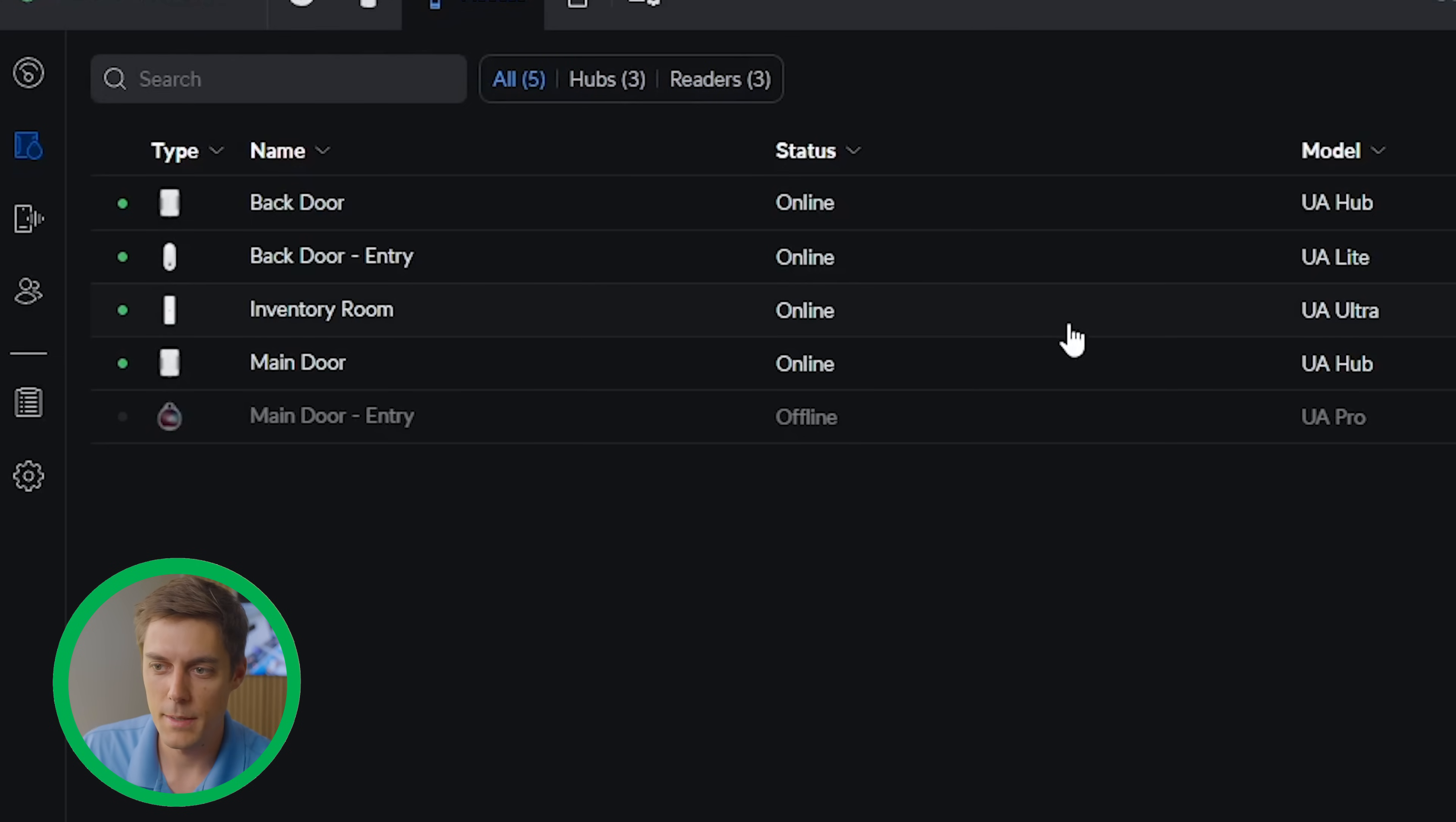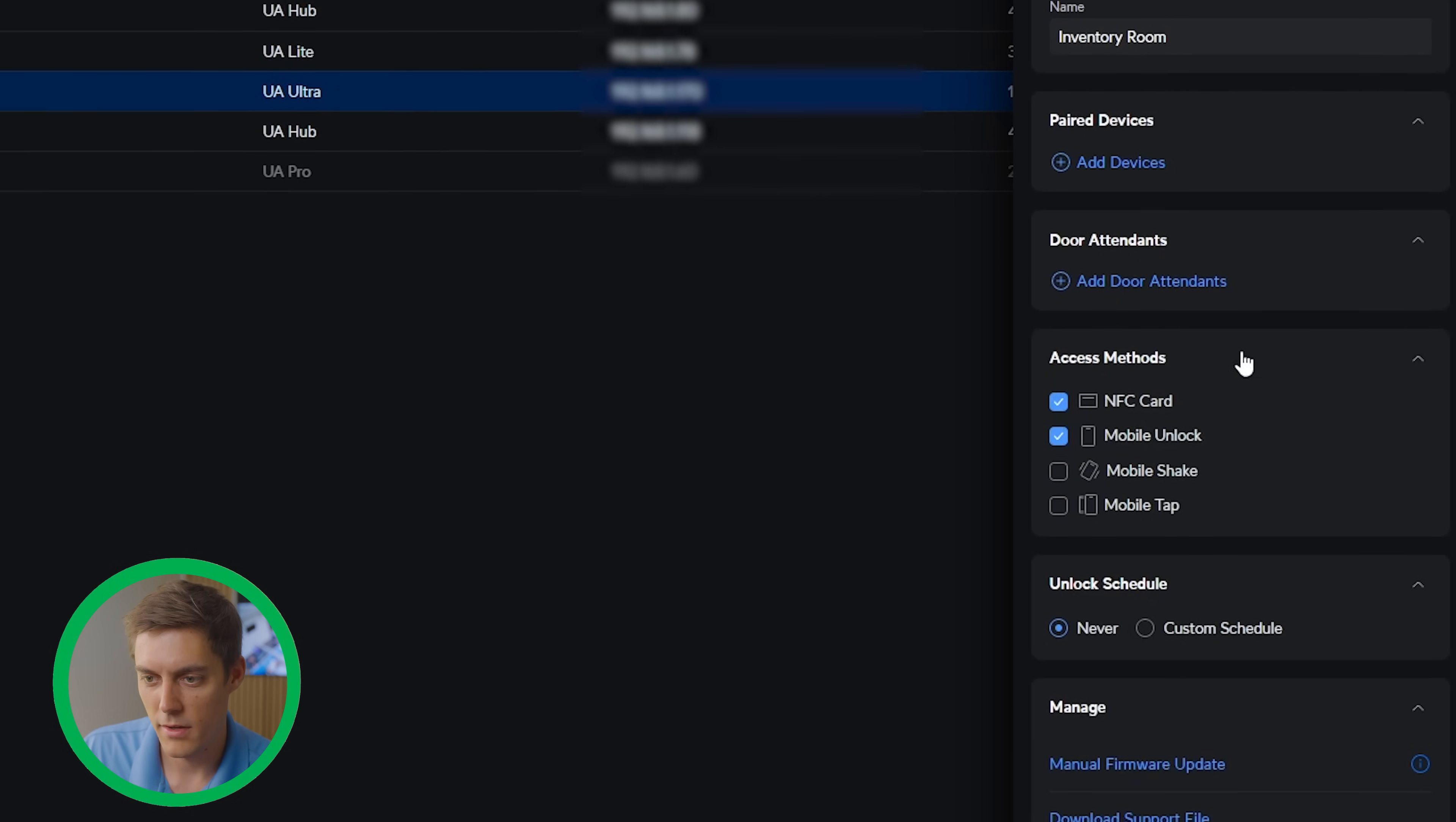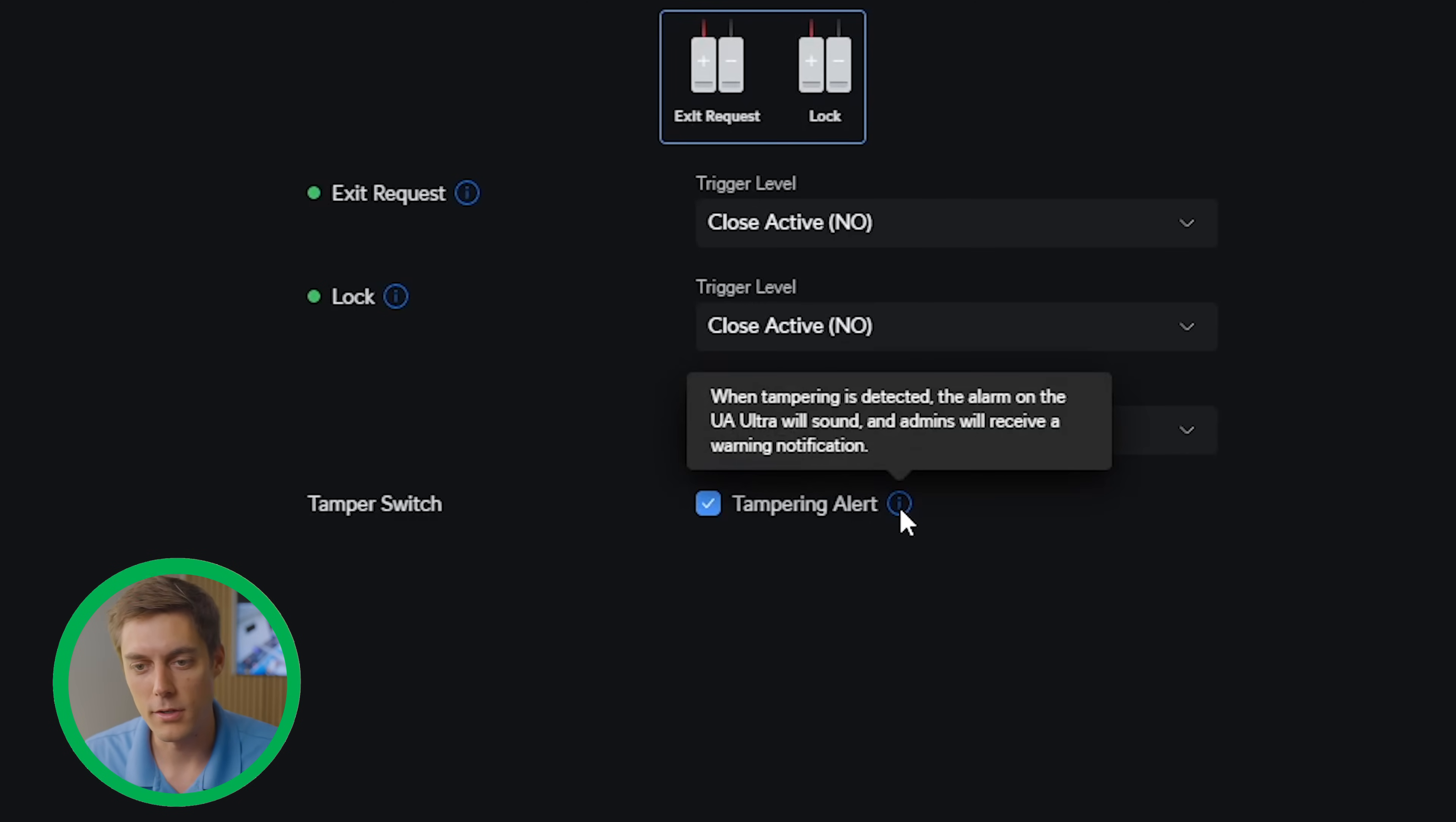Alright, the inventory room has adopted. We can see here we can test clicking to unlock. Pretty cool and shows any activities. We can go through and see what paired devices we have, what other access methods we're going to allow with this, and the typical firmware update options. Another neat factor about this new UA Access Ultra is it has a tamper detection on the back of it. When you mount that button flush to the wall it presses in, and you have this tampering alert option. When people pull it off or tamper with it, that button will release and the alarm on the ultra will sound and admins will receive a warning notification. You can disable that or leave it on as you will.